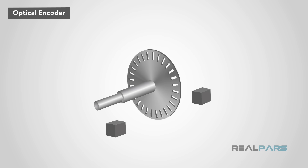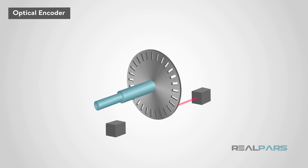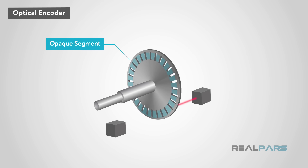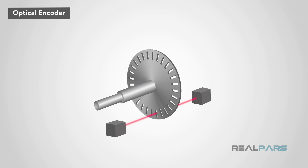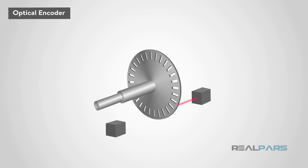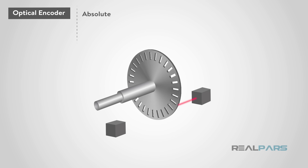Optical encoders interpret data in pulses of light, which can then be used to determine such things as position, direction, and velocity. The shaft rotates a disk with opaque segments that represent a particular pattern. These encoders can determine movement of an object for rotary or shaft applications, while determining exact position in linear functions. Optical encoders are used in various applications such as printers, CNC milling machines, and robotics. Again, these encoders may be absolute or incremental.